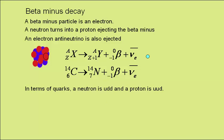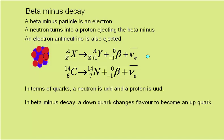In terms of quarks, a neutron consists of an up and two downs, and a proton is two ups and a down. So in beta minus decay, a down quark has changed flavour to become an up quark. This is a weak interaction, involving the weak force.